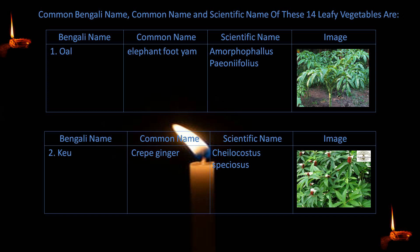The common Bengali name, common name, and scientific name of the 14 leafy vegetables are: 1. Ool — elephant foot yam — Amorphophallus paeoniifolius. 2. Keu — crepe ginger — Cheilocostus speciosus.